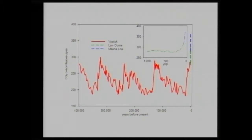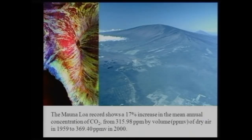In the last 400,000 years, we had ups and downs in CO2, up to 300 parts per million in the atmosphere. Since the Industrial Revolution in the 19th century, there was a big increase in CO2. This is recorded from the Mauna Loa station in Hawaii, where recordings since 1959 show an increase of 17% from 316 parts per million to around 370-380 parts per million today.